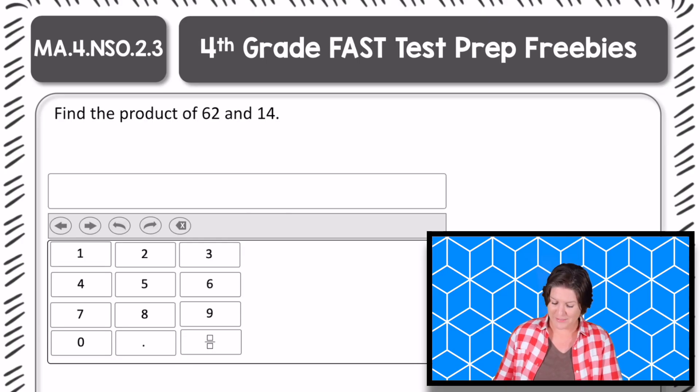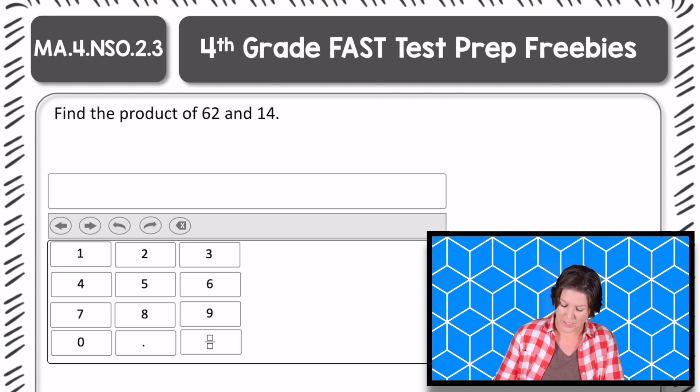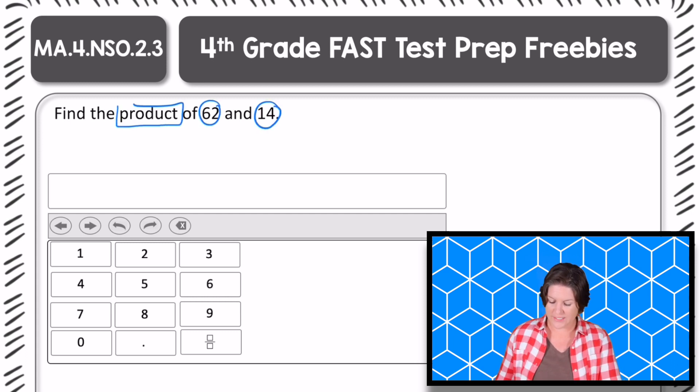Alright, welcome back. So this one says to find the product of 62 and 14. Okay, and again, we have an equation editor. So at the end, we'll input our answer into that equation editor box.